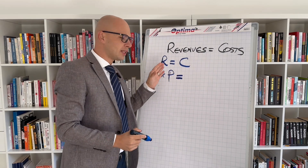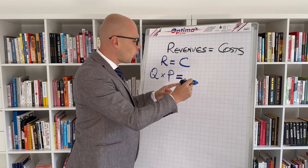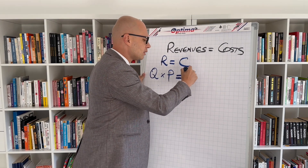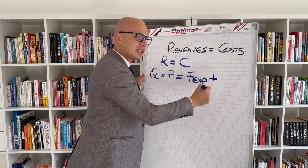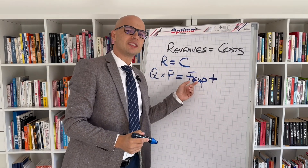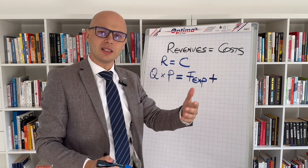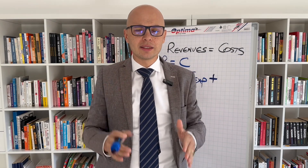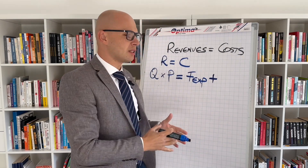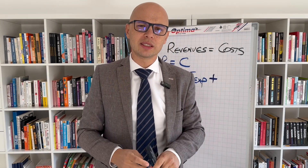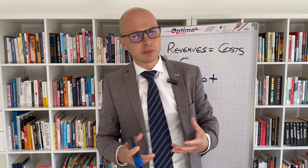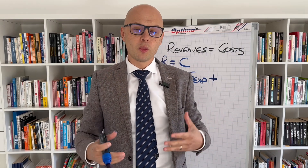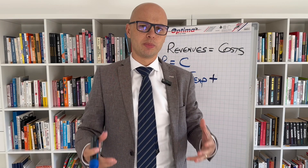For breakeven to happen, I need to equalize quantity times price to the cost, which is fixed expenses plus variable expenses. Fixed expenses are not dependent on how much I sell — if I don't sell anything, I still have to pay fixed expenses: marketing budget, rent, utilities, whatever is necessary to operate the business. Think of fixed expenses as the foundation from which you actually generate the business.